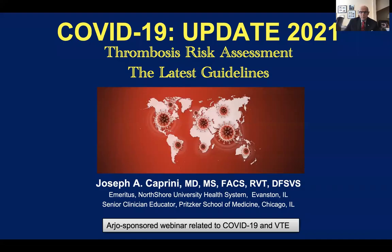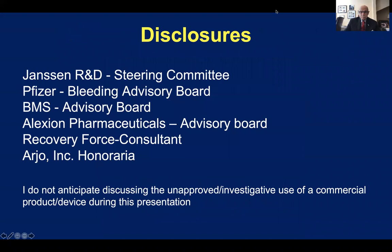Greetings to everyone from around the world. It's a great pleasure to participate today in this webinar, and I give thanks to the Arjo Corporation for helping to make this possible. This is a very important discussion because I've worked very hard to figure out exactly how to present this, in the year that the guidelines came out from ASH regarding thrombosis prophylaxis in surgical patients. There's some important information you all need to know in order to apply the risk assessment score to your patients.